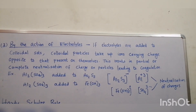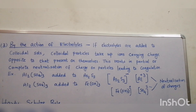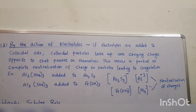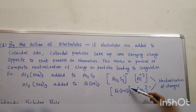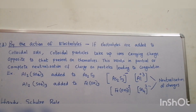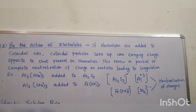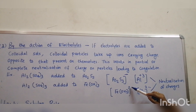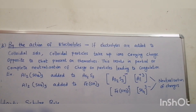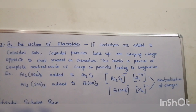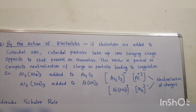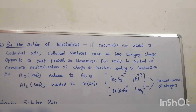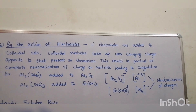Similarly, when aluminium sulfate is added to ferric hydroxide — a positively charged sol — the sulfate ion neutralizes some of the charges on ferric hydroxide. The neutralization of charge takes place and the colloidal particles coagulate.